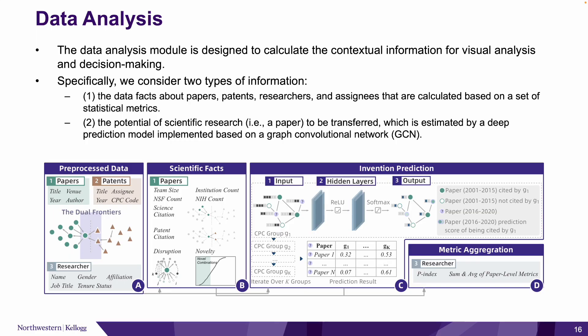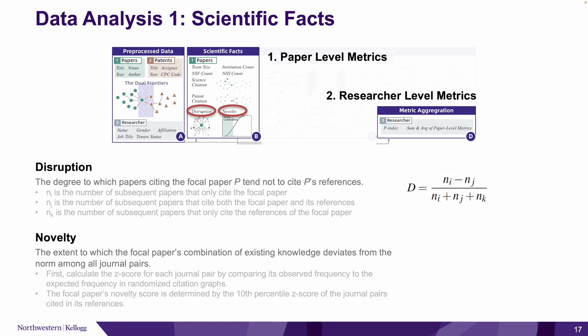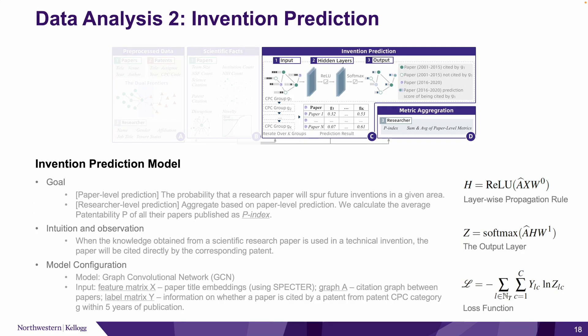Based on these datasets, we propose an analytical framework to measure the interplay between science and technology, and also predict future technological inventions. We first capture the scientific effects for each paper based on a set of metrics, such as disruption, novelty, and team size. Based on the paper-level metrics, we aggregate and obtain researcher-level metrics.